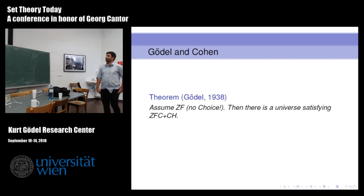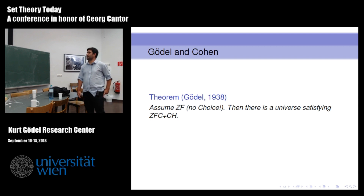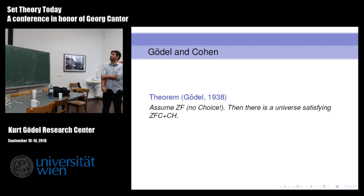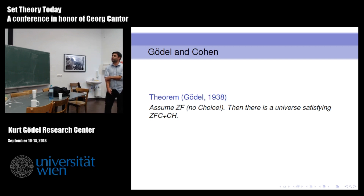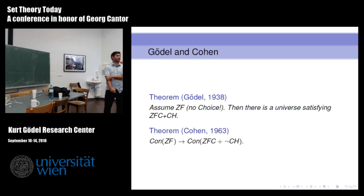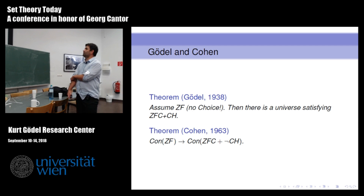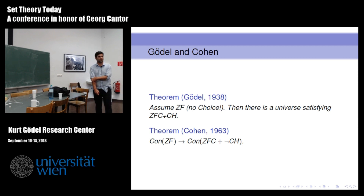So what happened? Gödel proved in 1938 - and he did not need choice - that you can build what he called the constructible universe and show that, starting from a model of ZF, you can build a model of ZFC plus CH. Cohen many years later discovered forcing and showed that you can also force not-CH.